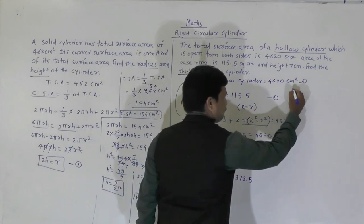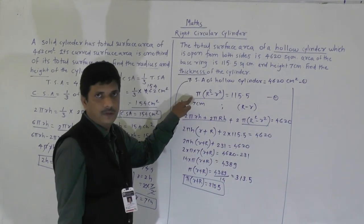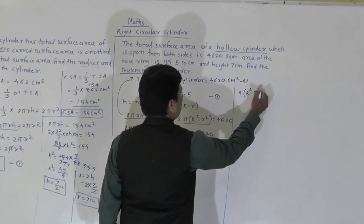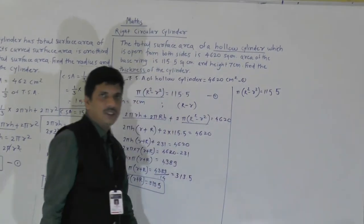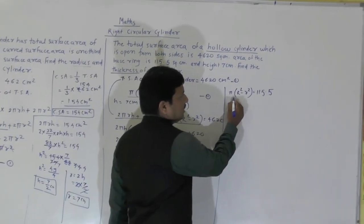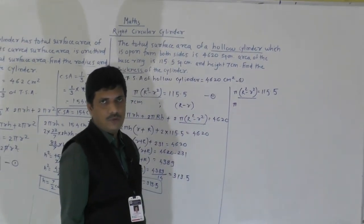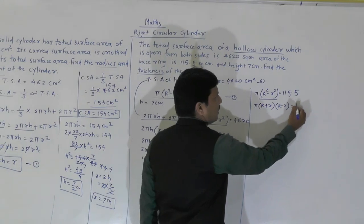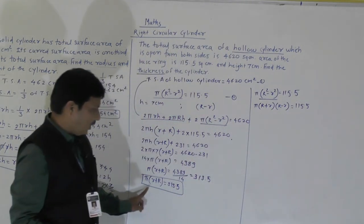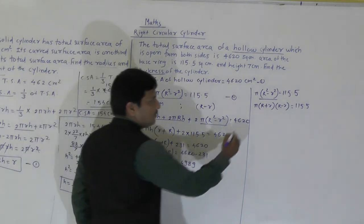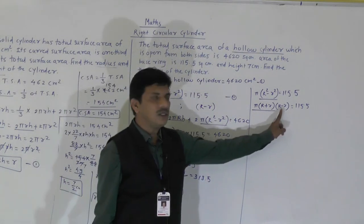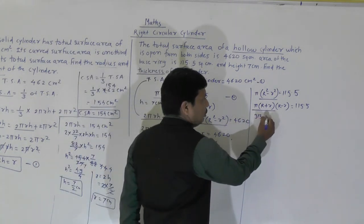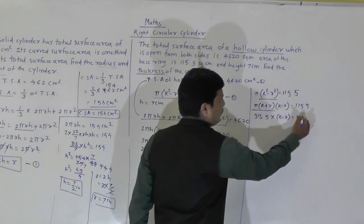But we have to find the thickness R minus r, not R plus r. So we will use the second equation: π(R² - r²) equals 150.5. Using the algebraic identity a² - b² = (a + b)(a - b), we write π(R + r)(R - r) equals 150.5. We already know that π(R + r) equals 330.5. Substituting that value: 330.5 × (R - r) equals 150.5.